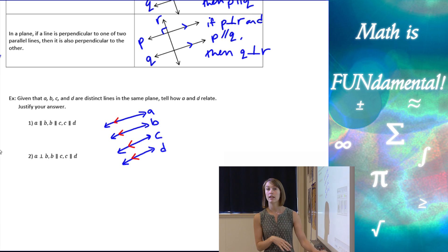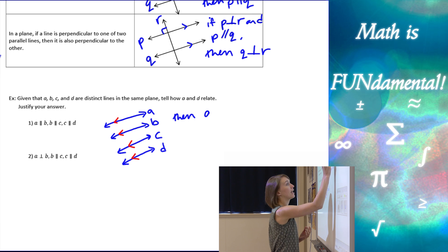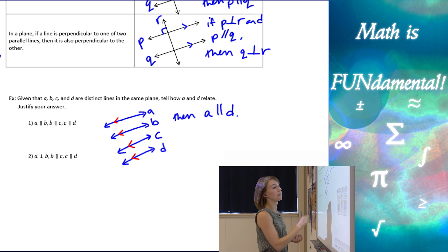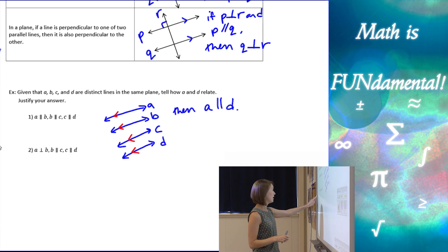All right. So, I have a bunch of lines that are all parallel to each other. So, looking at our diagram, what can we say about A and D? Well, I know from my diagram and my information, A has to be parallel to D.